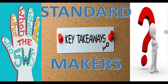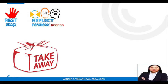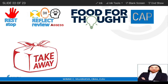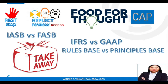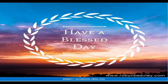For our key takeaways: we applied the five W's of the standard makers — who, what, when, where, and why. We covered key information on the IASB and FASB in relation to IFRS and GAAP, which will have a separate material, and we discussed the difference between rules-based and principle-based standards. Have a blessed day. If you have any questions, you can give your feedback. Thank you.